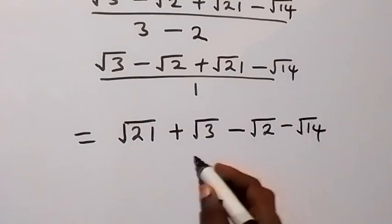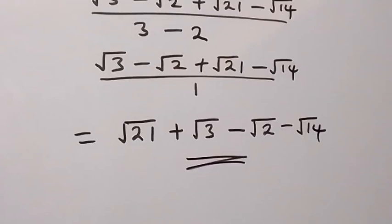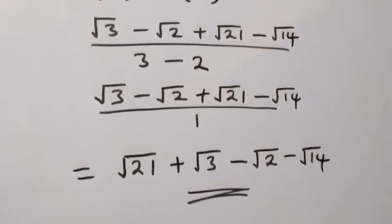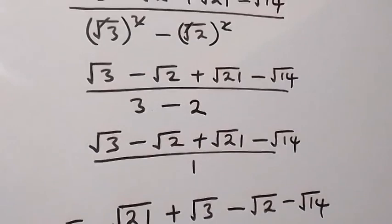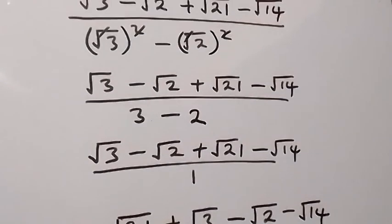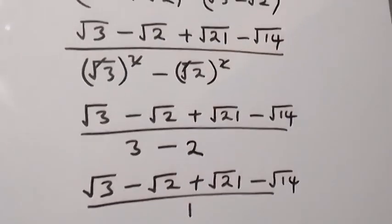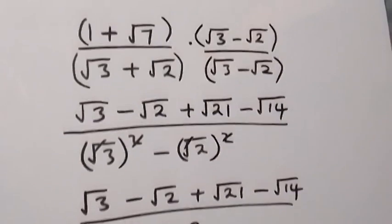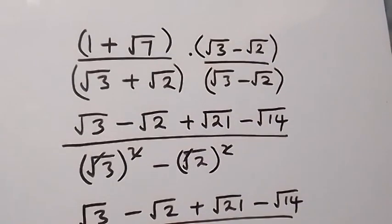We can write this as root 21 plus root 3 minus root 2 minus root 14. So here we have the simplified form of this problem. Thank you for watching — don't forget to subscribe for more exciting videos, turn the notification bell on, share this video, give a thumbs up, and put your comment in the comment section. See you in the next video!